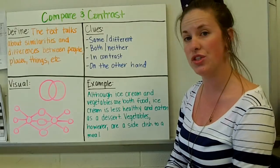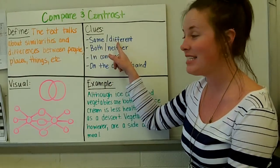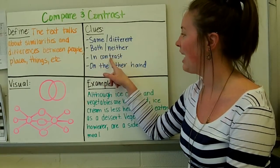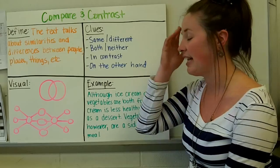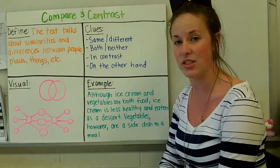Some of the clue words that you can look for to help you recognize whether it's compare and contrast: same and different, both or neither, in contrast, and on the other hand. So if you see any of these clues, it's a good hint to you of what kind of text structure you're reading.